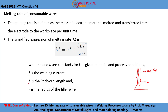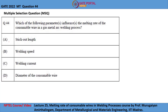The welding current I, the stick out length L, and the radius of the filler wire R will have an influence on the melting rate M. Since melting rate is a measure of amount of material melted with respect to time, it will not have an influence on the welding speed. So the correct options are option A (stick out length), option C (welding current), and option D (diameter of the consumable wire).